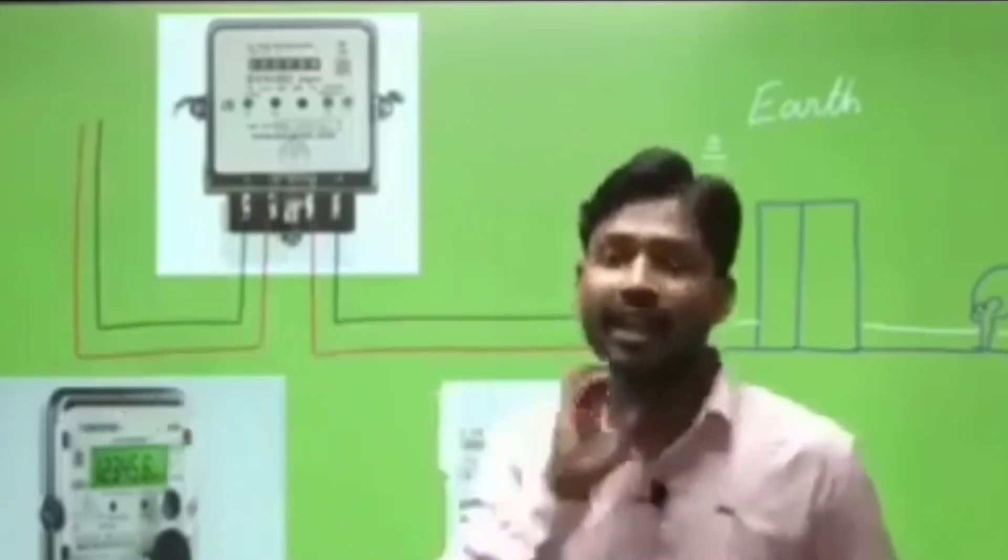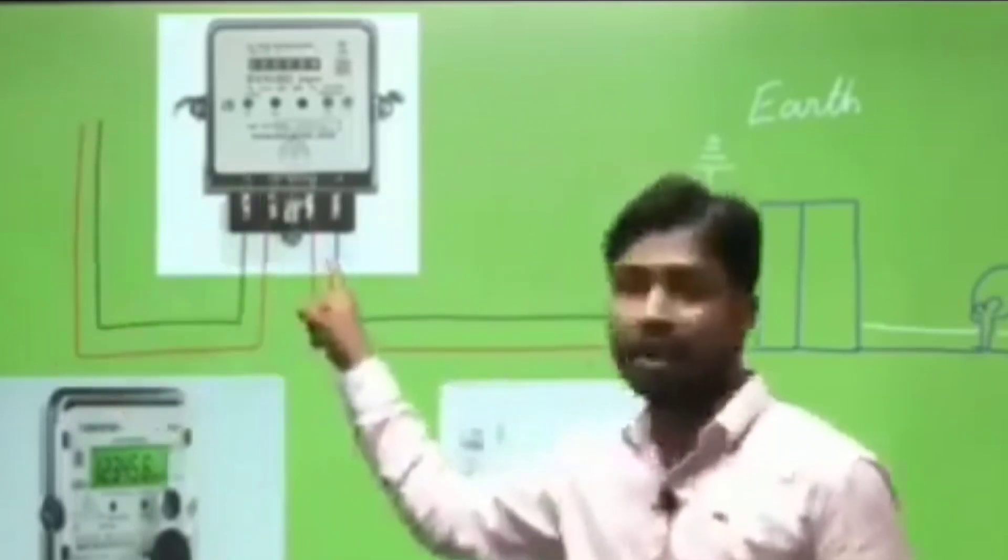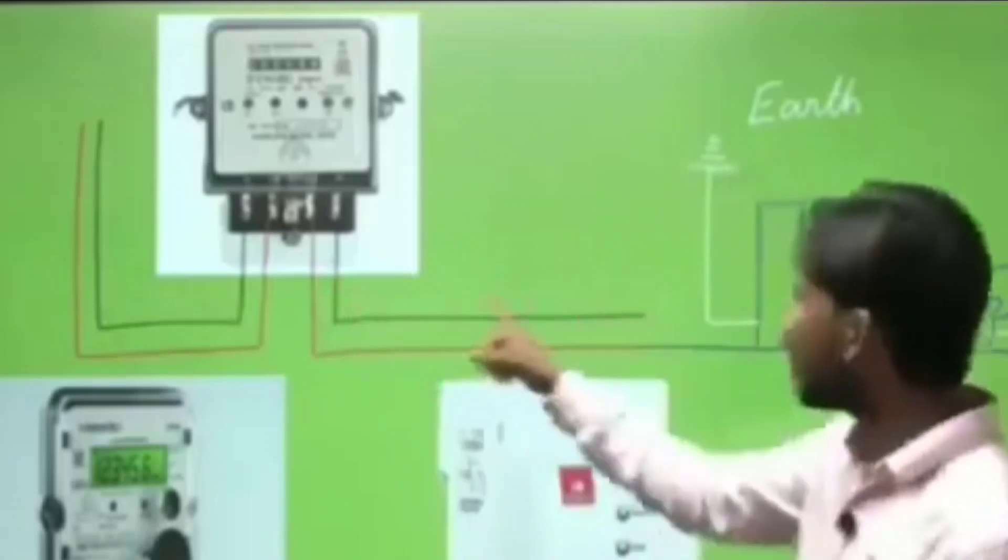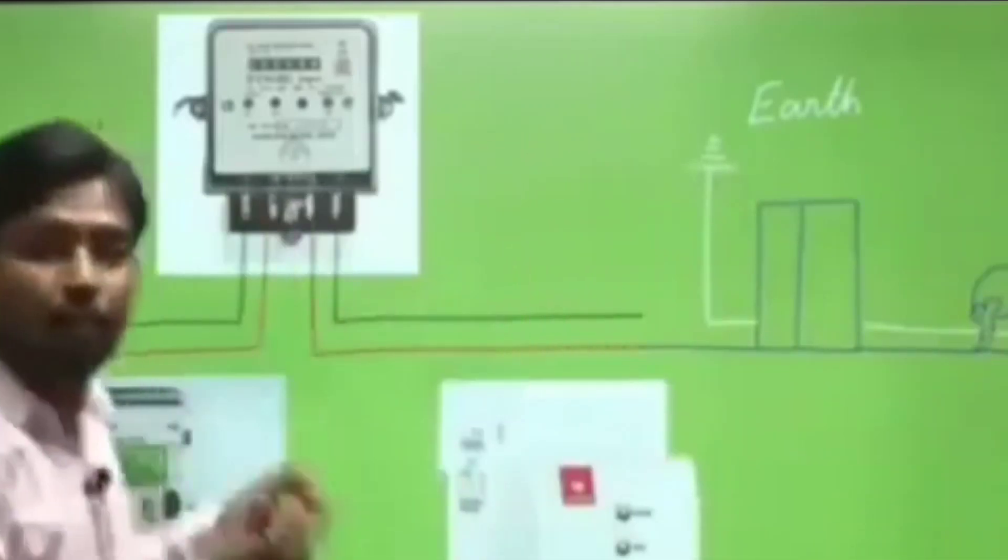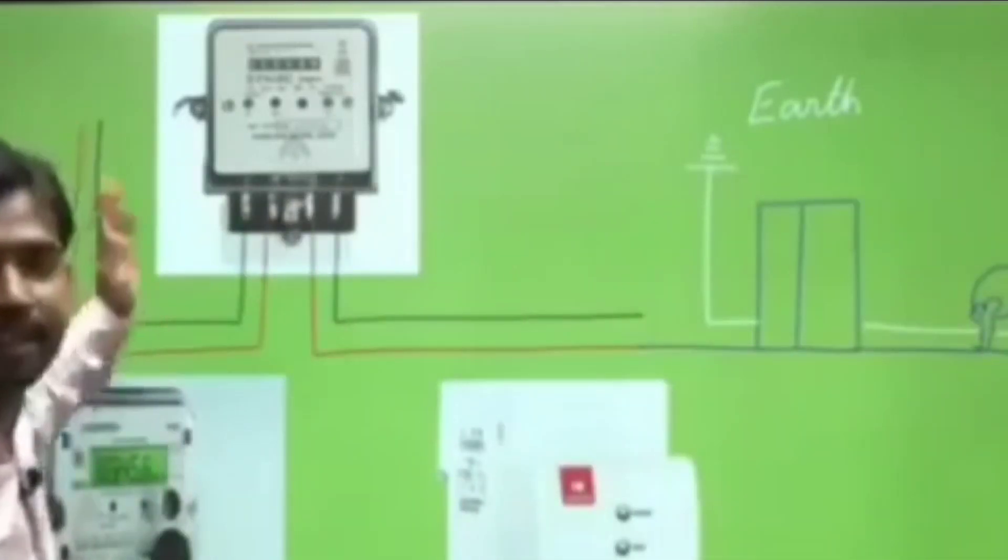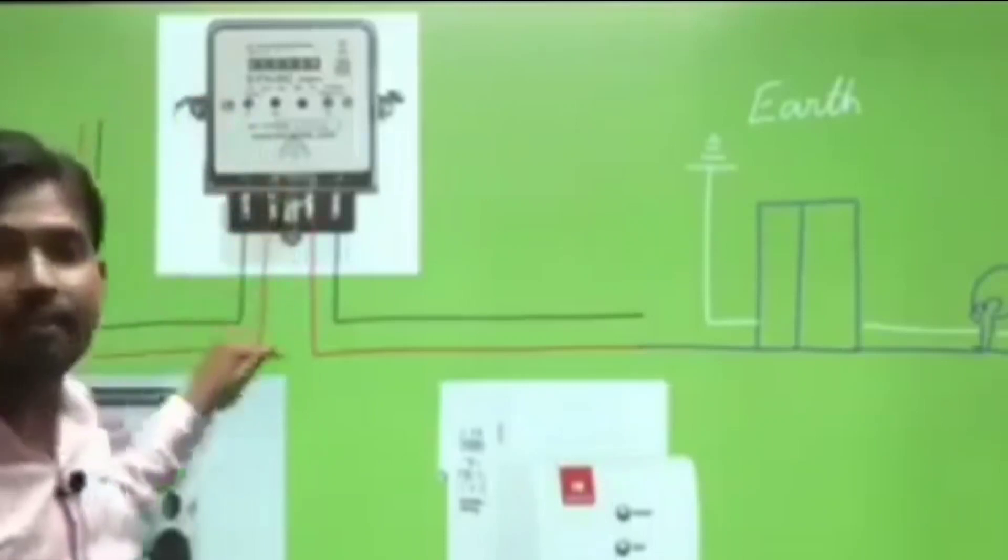So now you will say, sir, if we connect it to neutral, then like I said, you have to take it from here. The meter at your pole has one phase, one neutral, and then you will get from here one phase and neutral.